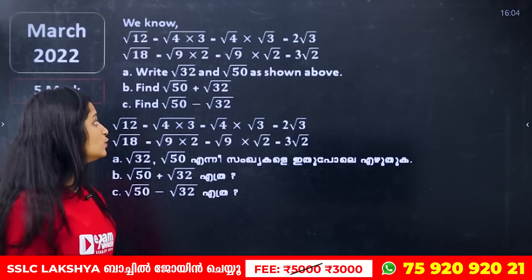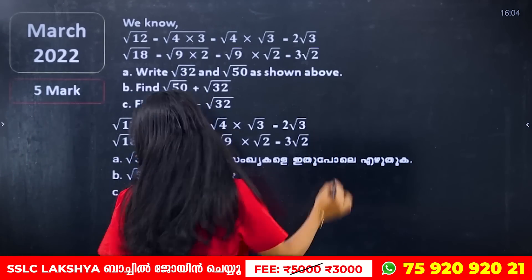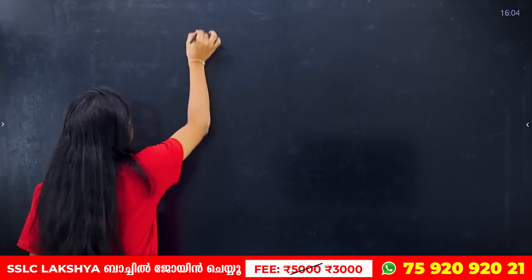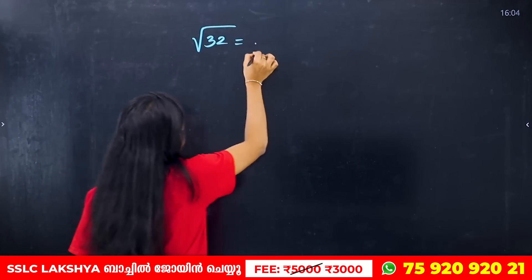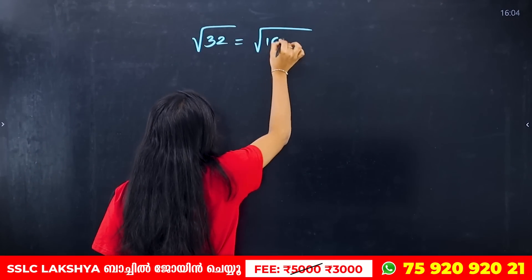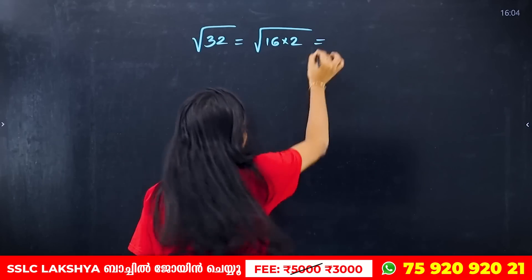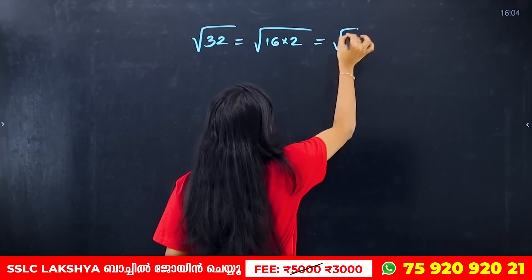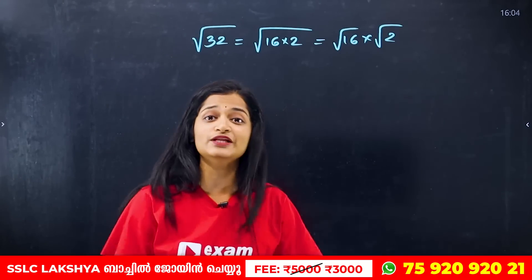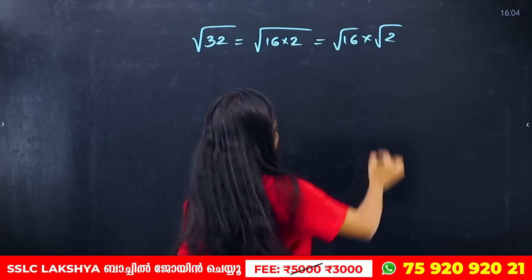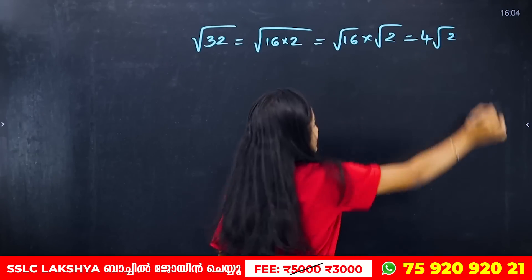Route 32 and Route 50 — how do we simplify Route 32? Route 32 equals Route 16 into 2, which is Route 16 into Route 2. Route 16 is 4, so Route 32 equals 4 Route 2.